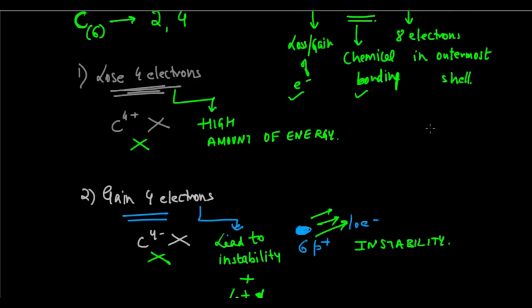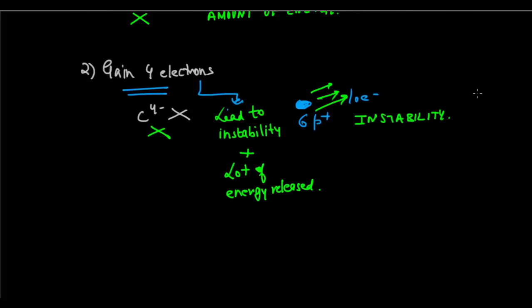Well that's why we take up the concept of bonding. Carbon does not lose or gain electrons and hence does not form ionic compounds. Since carbon does not form ions, it's obvious that it will not form ionic bonds or ionic compounds.